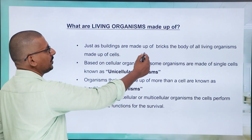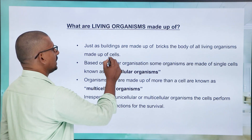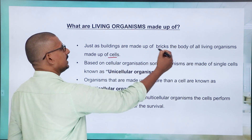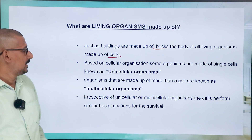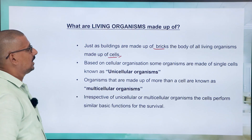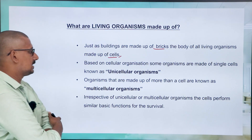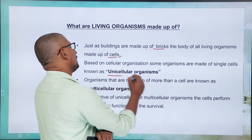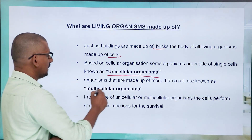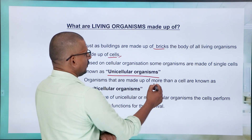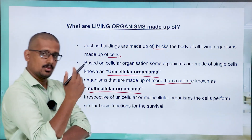Just as buildings are made up of bricks, the body of all living organisms is made up of cells. Based on cellular organization, some organisms are made of a single cell, known as unicellular organisms. Organisms made of more than one cell are known as multicellular organisms — for example, humans and plants.